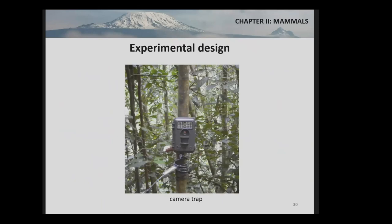Those videos did not necessarily show mammals — often they showed moving grass, especially in the savannah, since the cameras are very sensitive to movement and trigger at the slightest motion, which was problematic in windy conditions. In total, I collected around 1,600 videos that actually showed mammals, representing a total of 38 mammal species, of which 33 were wild mammals and 5 were domesticated mammals.